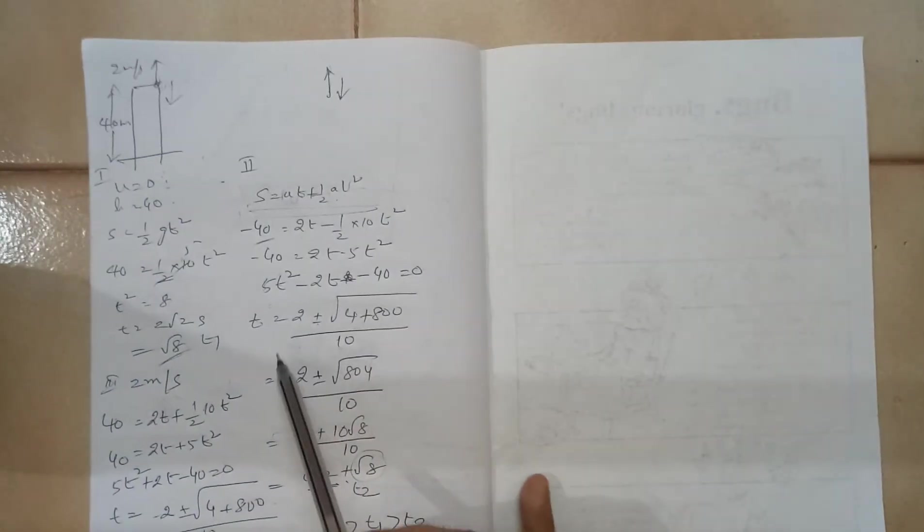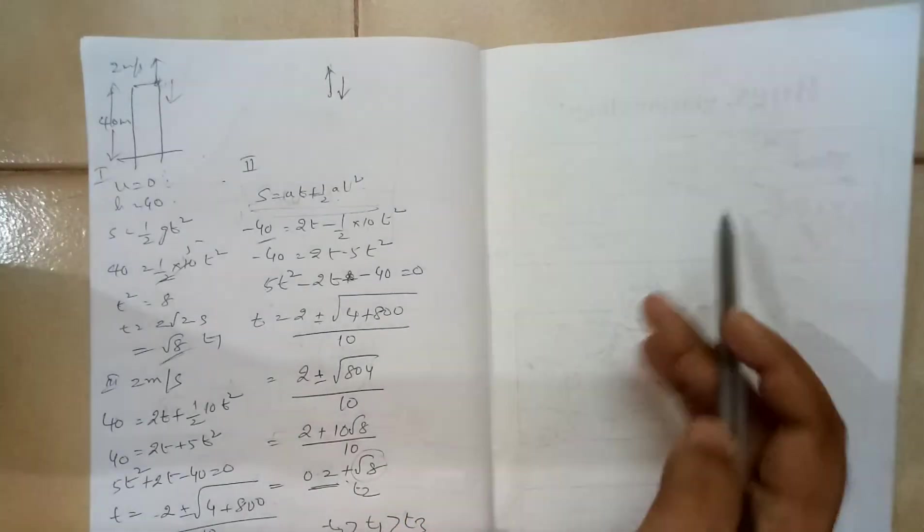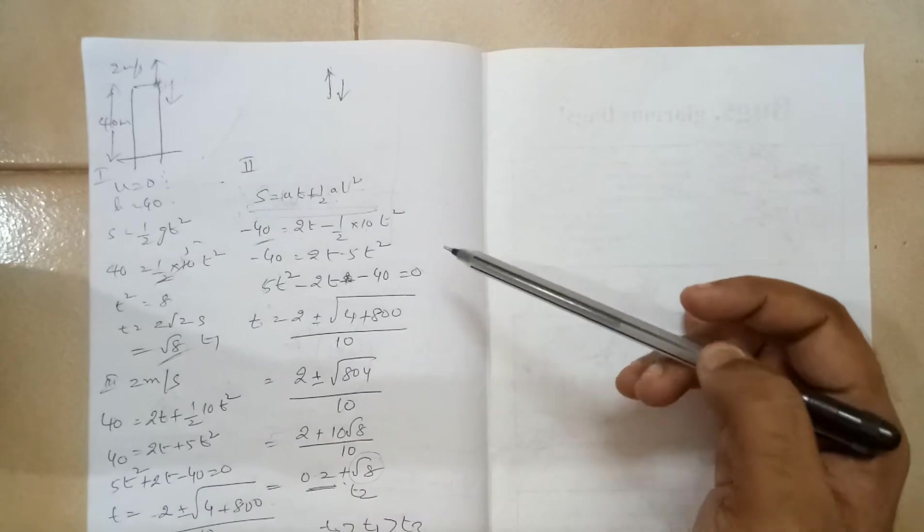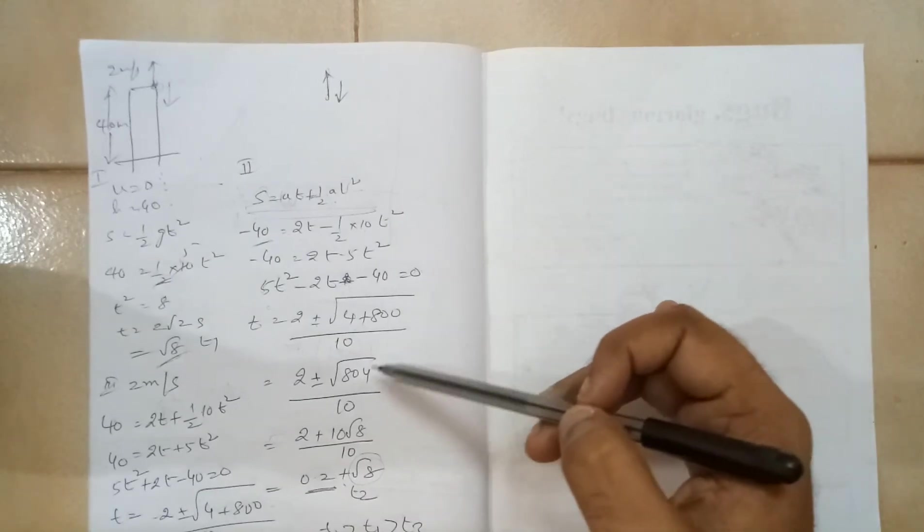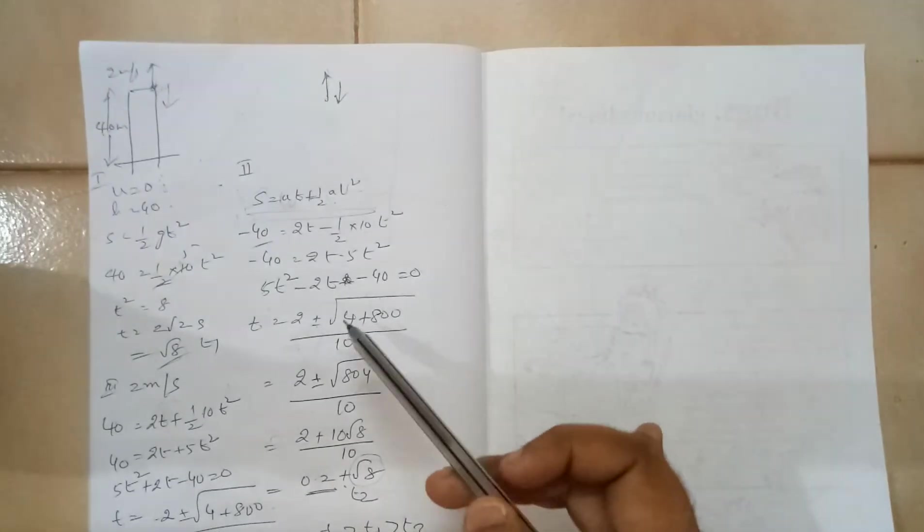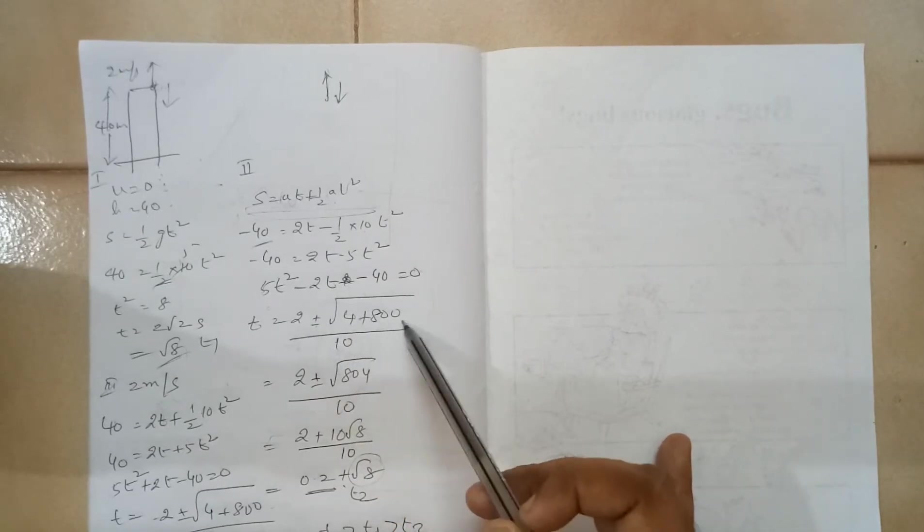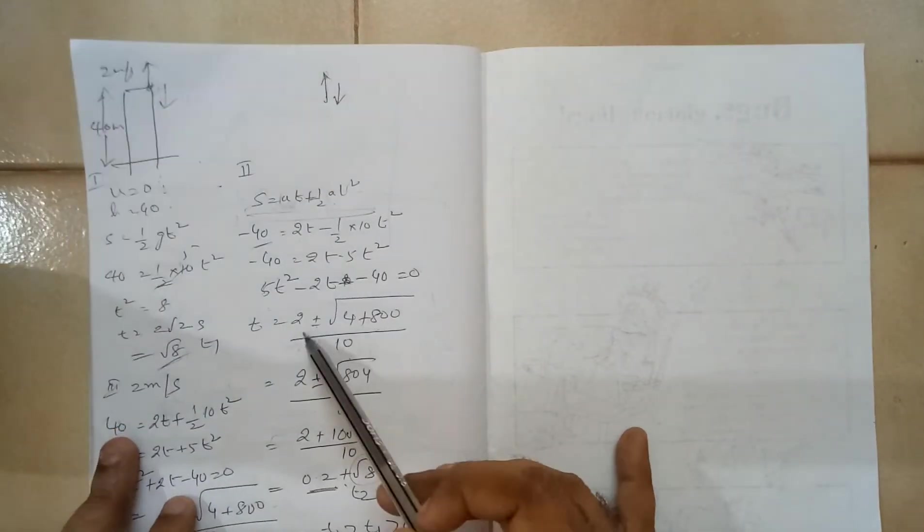You are getting a quadratic equation. When you solve the equation, this is a quadratic equation. The roots are minus b plus or minus root of b squared minus 4ac by 2a. So you get 2 plus or minus root 804 divided by 10.